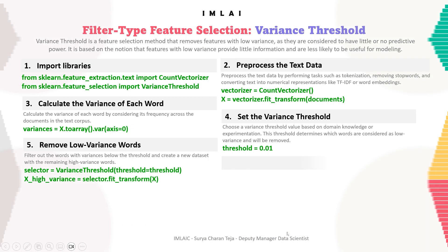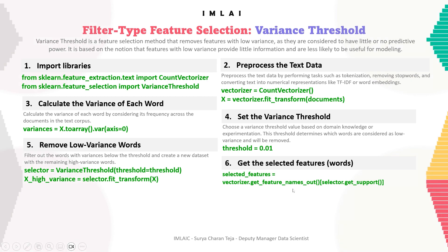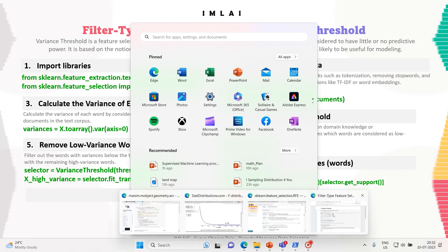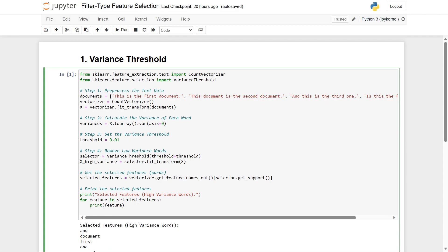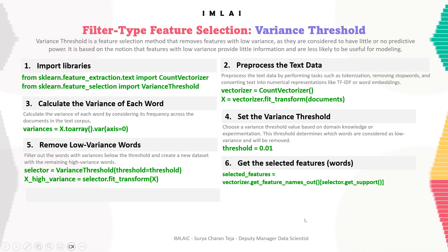The next step is to get the selected features or words. We use vectorizer.get_feature_names_out() and assign the result to selected_features to retrieve the names of the remaining high variance words.